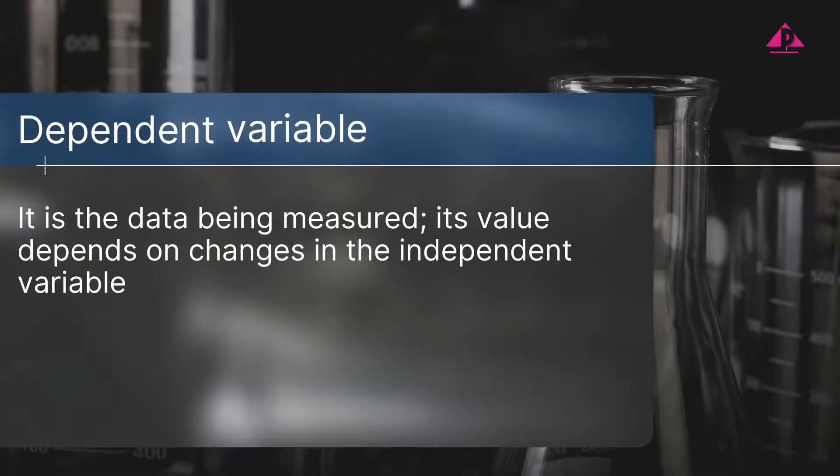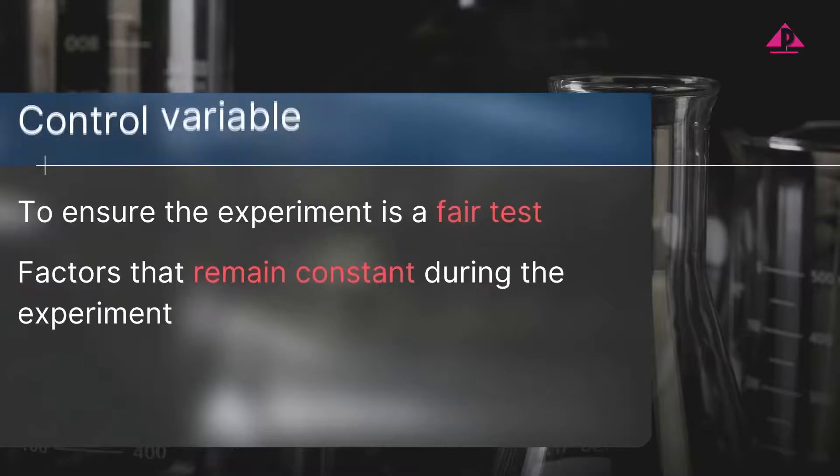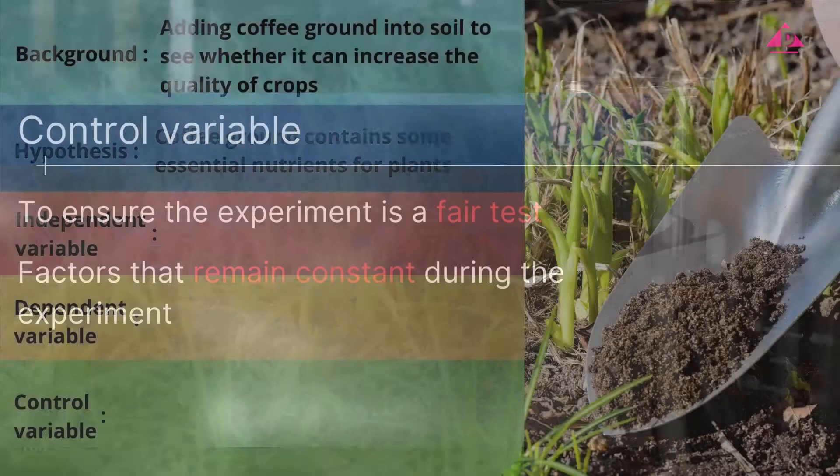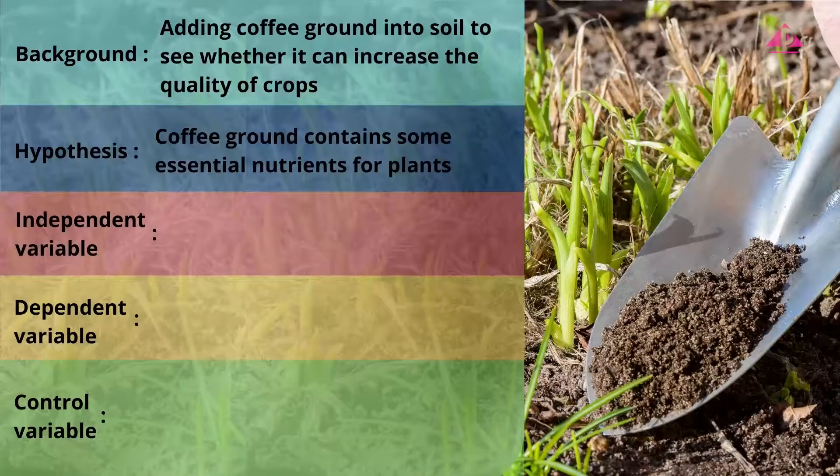Dependent variable is the factor that we are going to measure. In an experiment, its value depends on changes in the independent variable. To ensure the investigation is a fair test, all the other factors that may affect the dependent variable are kept constant. These are the control variables. Let's go back to the scenario mentioned earlier.